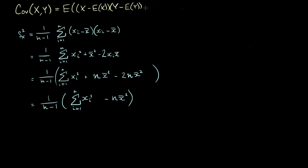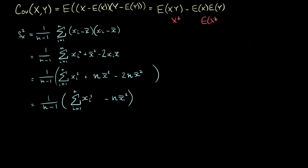Just like we had a much simpler expression for the variance, we also have a much nicer expression for the covariance: it's equal to the expected value of x times y, minus the expected value of x times the expected value of y. This should look very similar to the nice formula for population variance — if we replace y by x, we get E[x²] minus (E[x])², which leads to the nifty conclusion that the covariance of a variable with itself is just the variance.